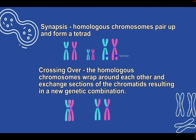After synapsis, they undergo a phenomenon called crossing over. These homologous chromosome pairs wrap around each other and actually exchange sections of the chromatids to create a new genetic combination — we're breaking off pieces of DNA and recombining them. The chromosome inherited from the father ends up with a small section from the mother, and vice versa. This gives us genetic diversity, because the person who receives one chromatid will be genetically different from the person who receives another, even from the same starting cell.